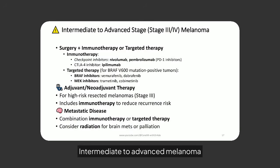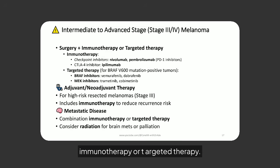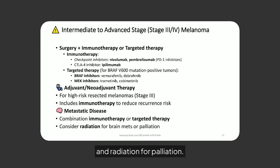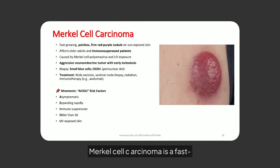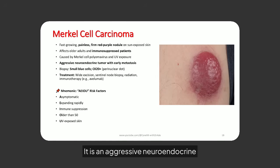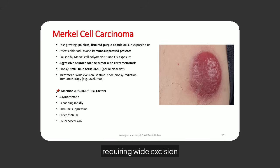Intermediate to advanced melanoma stages require surgery combined with immunotherapy or targeted therapy. Adjuvant therapy reduces recurrence risk, while metastatic disease may involve combination therapies and radiation for palliation. Merkel cell carcinoma is a fast-growing, painless nodule on sun-exposed skin, affecting older and immunosuppressed patients. It is an aggressive neuroendocrine tumor with early metastasis, requiring wide excision and immunotherapy for management.